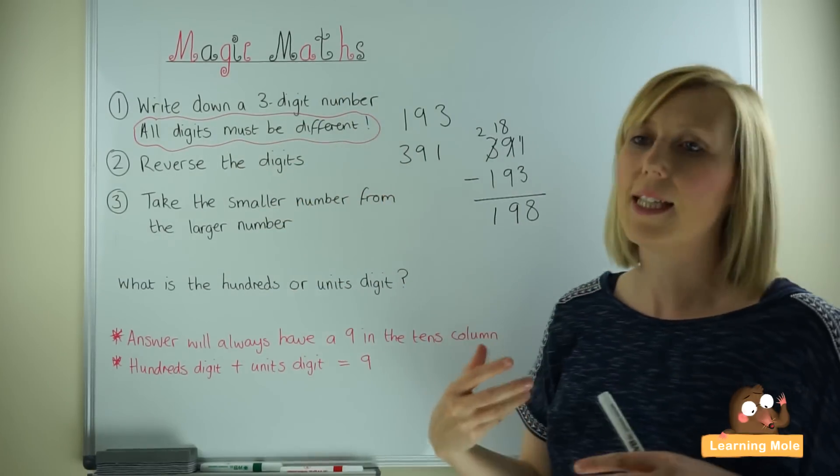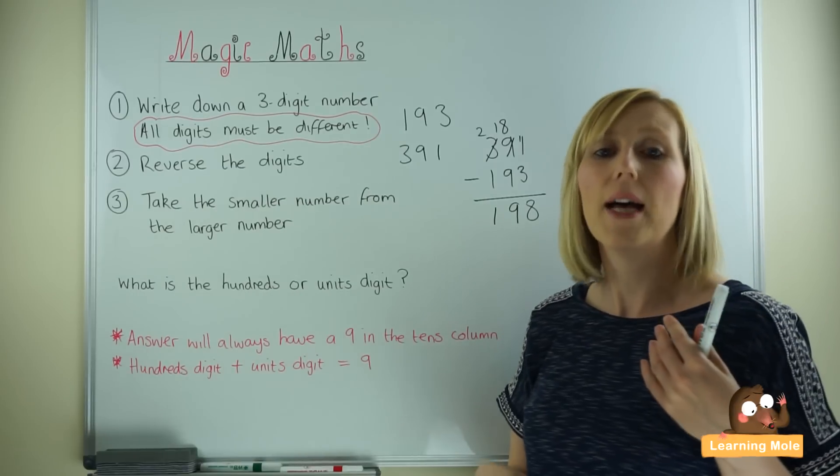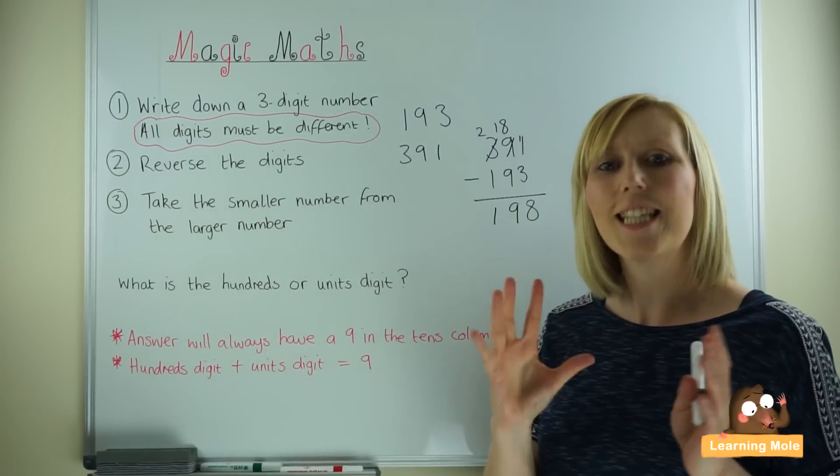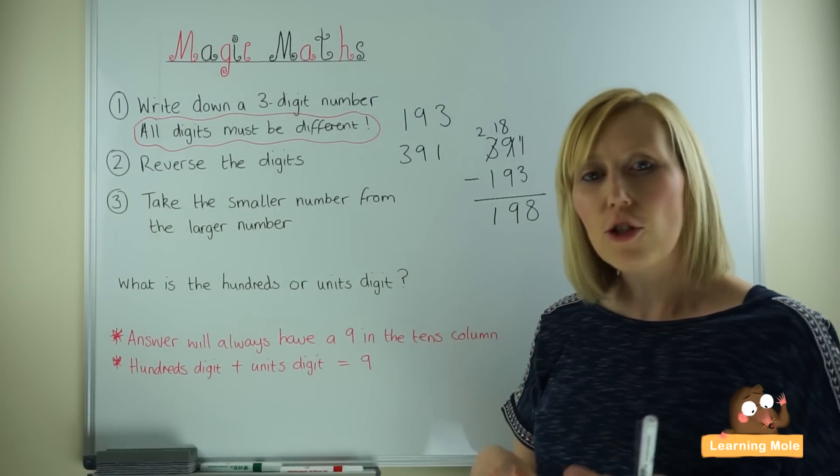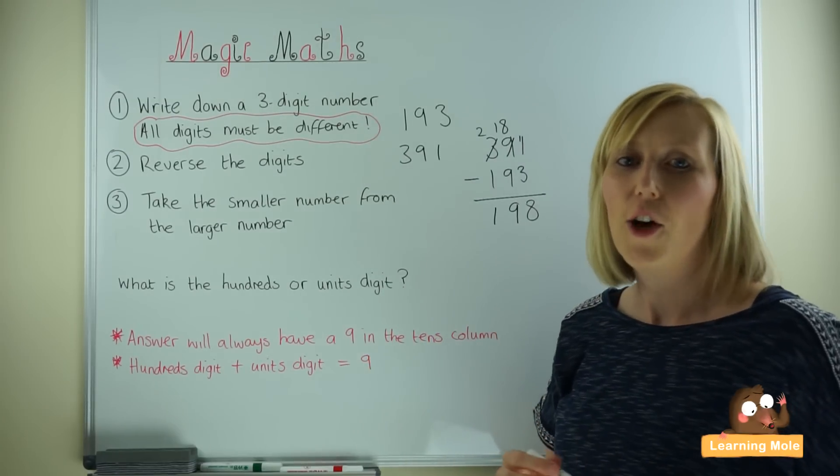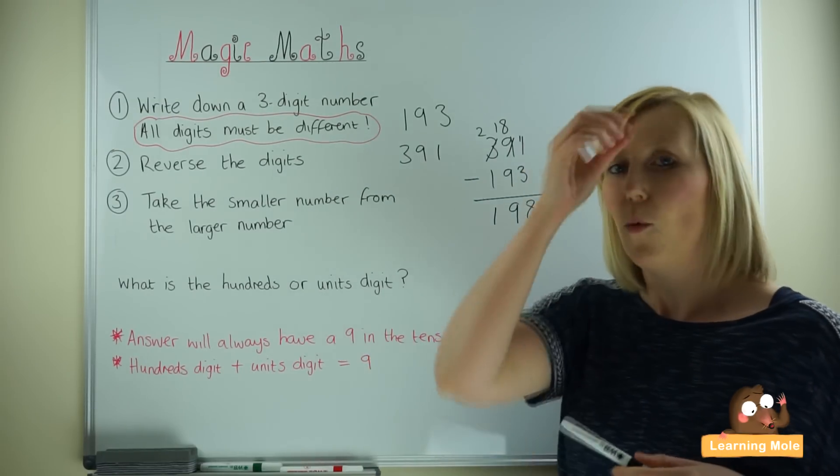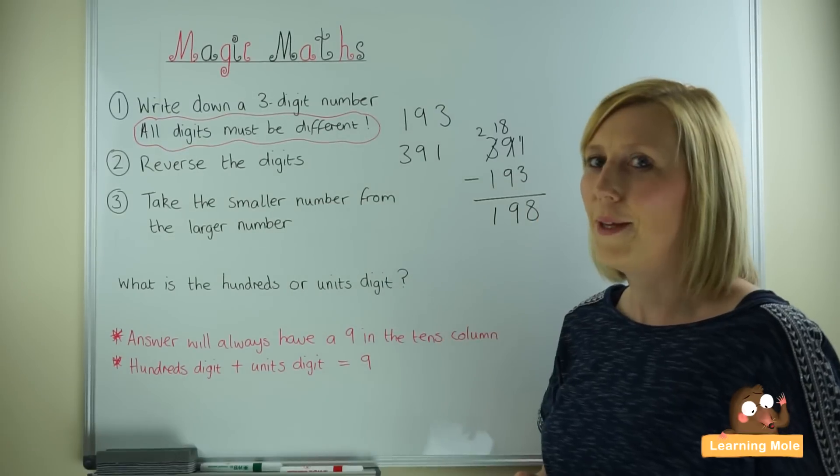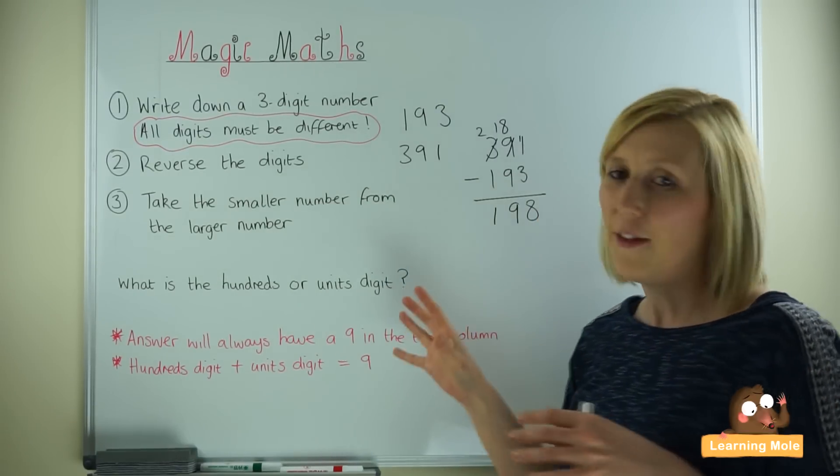This part you're asking the adult or you're asking your child to do in secrecy. They are not to show you any of these calculations or any of these numbers. They're going to work that out on a separate piece of paper where you can't see. Because now we have the maths magic part.